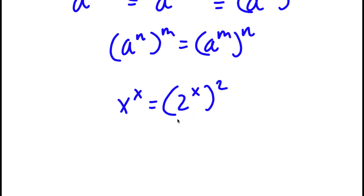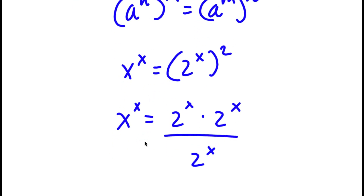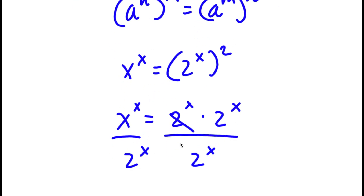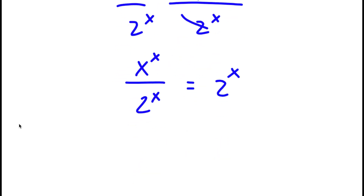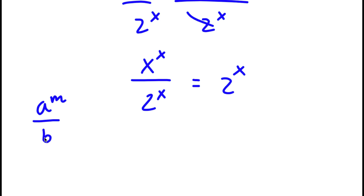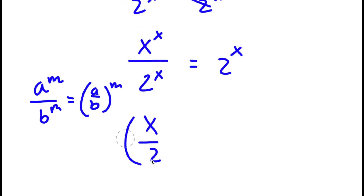Now, 2 to the power of x squared, I'm going to rewrite as 2 to the power of x times 2 to the power of x. On both sides, I'm going to divide by 2 to the power of x, so these two cancel out. Now I'm left with x to the power of x over 2 to the power of x is equal to 2 to the power of x. If I have something in the form a to the power of m over b to the power of m, this equals a over b to the power of m. So this equals x over 2 to the power of x, which equals 2 to the power of x.